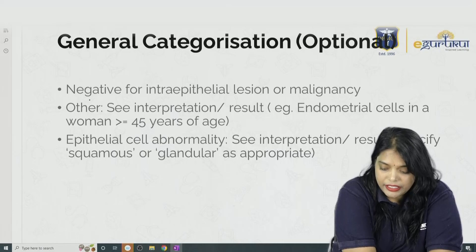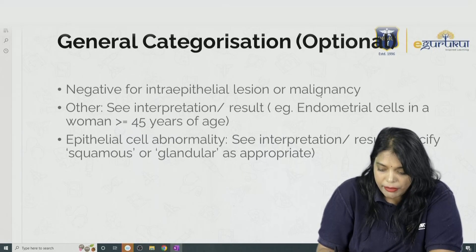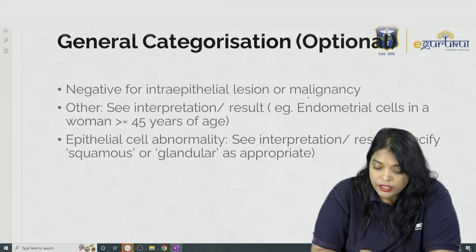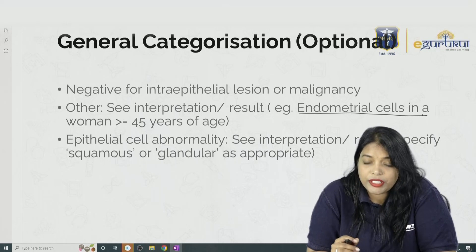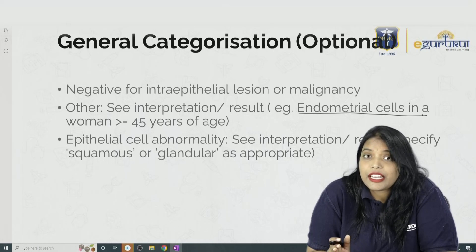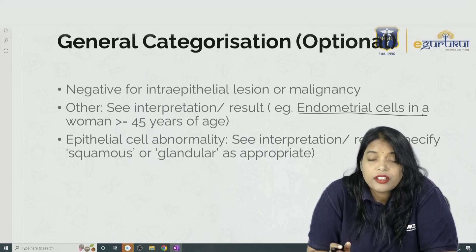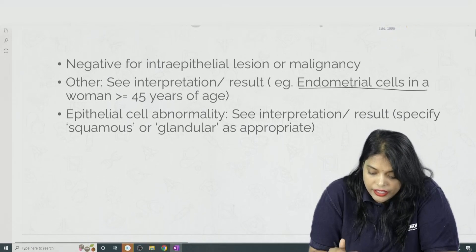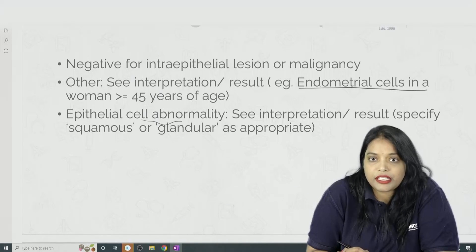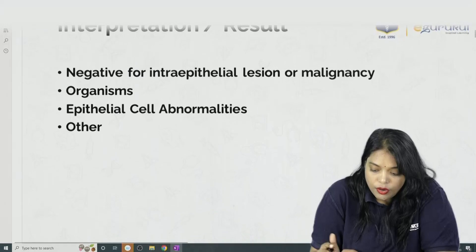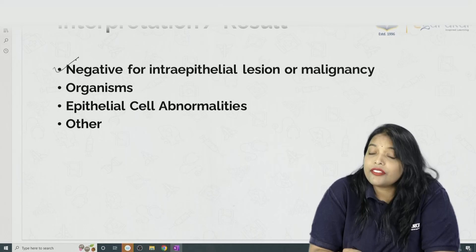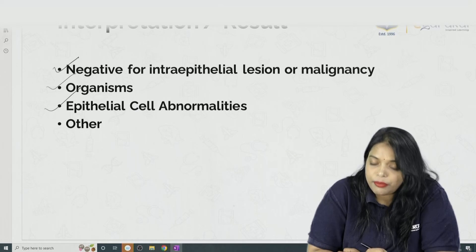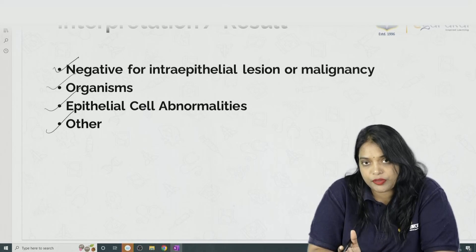Under general categorization, if the result is normal, it is reported as 'negative for intraepithelial lesion or malignancy.' Under 'others,' endometrial cells may be mentioned — seeing endometrial cells on pap smear is not normal and should prompt biopsy. Any epithelial cell abnormalities are also mentioned, along with any organisms present.